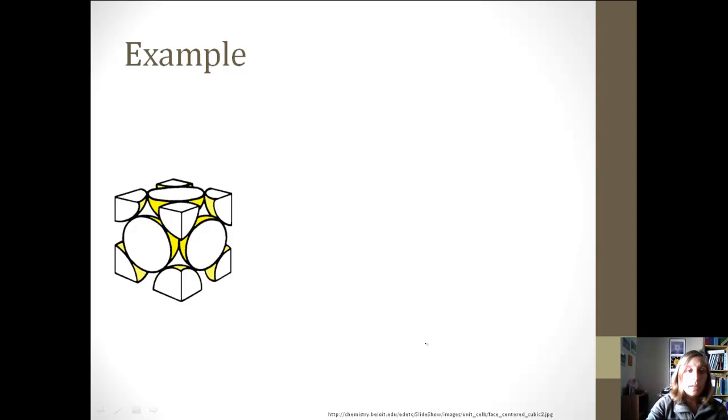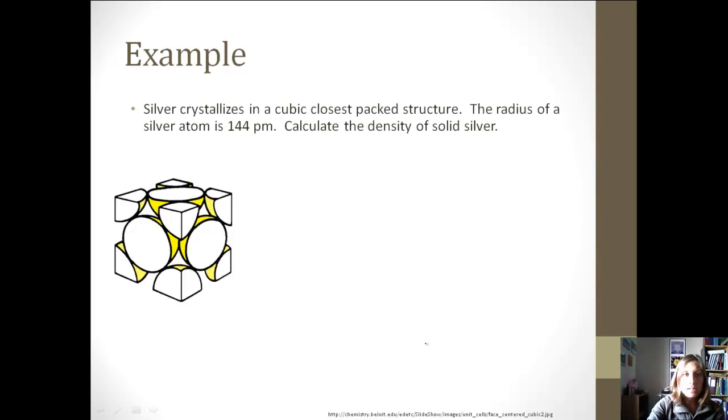So let's try an example with this. Based on what the unit cell looks like, we can figure out density. So we have silver crystallizes in a cubic closest packed structure, and I'm giving you a picture of the unit cell. The radius of a silver atom is 144 picometers. One times 10 to the 10 picometers is equal to 1 centimeter, so they're pretty small, and we want to calculate density. So I want you to try this one, but let me give you a few hints first. You know that density equals mass over volume. So let's solve for these two parts individually and then plug them in.